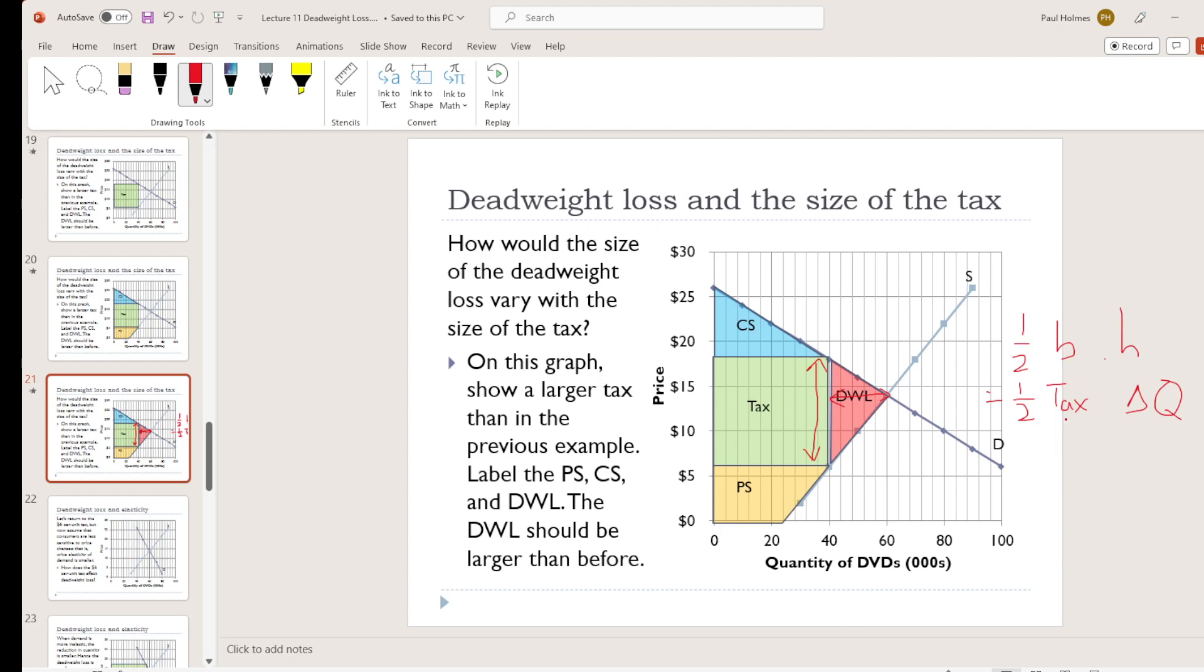So our tax per unit doubled, right? From 6 to 12. Our quantity change also doubled. It was from 60 down to 50, a change of 10. Now it's 60 down to 40, a change of 20. So our change in quantity also doubled. So if we're multiplying by 2 there and we're multiplying by 2 there, then overall we must be multiplying by 4.